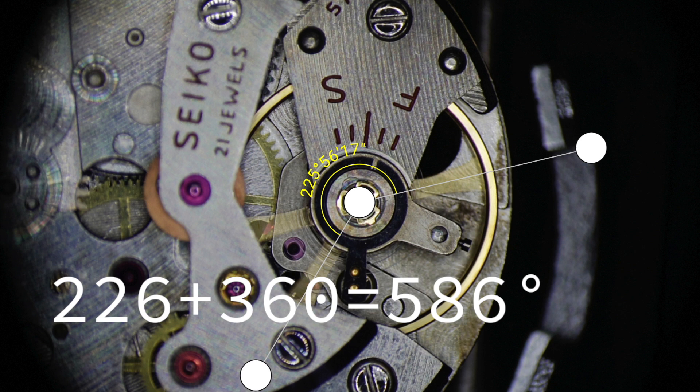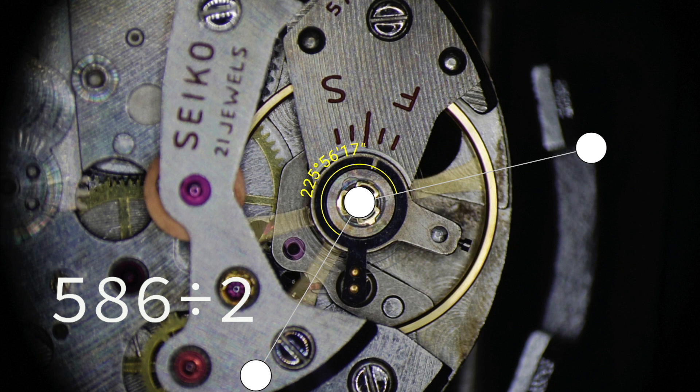The balance amplitude is calculated simply by taking that number and dividing by two, which in this case gives us a value of 293 degrees.